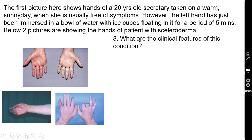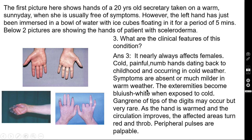Question three: what are the clinical features of this condition? The correct answer is it nearly always affects females, with cold, painful, numb hands dating back to childhood and occurring in cold weather. Symptoms are absent or much milder in warm weather. The extremities become bluish-white when exposed to cold. Gangrene of the tips of the digits may occur but is very rare. As the hand is warmed and circulation improves, the affected areas turn red and throb. Peripheral pulses are always palpable.